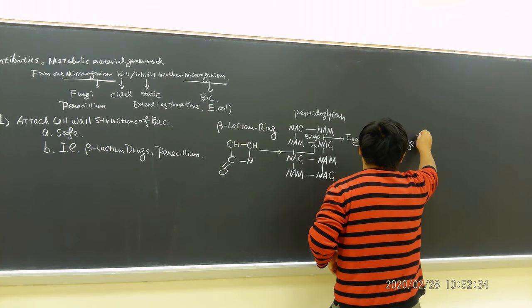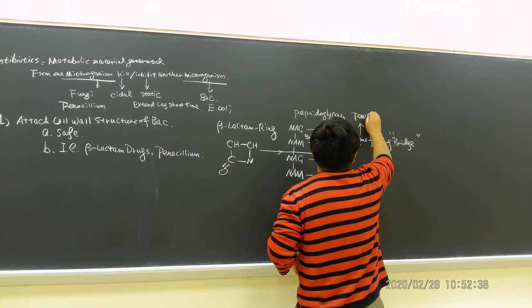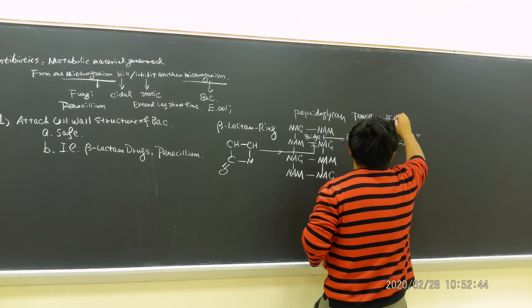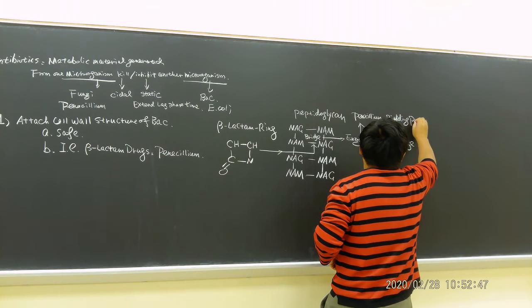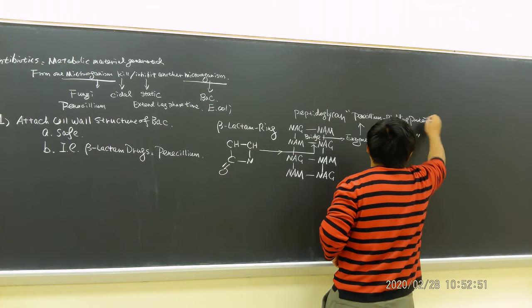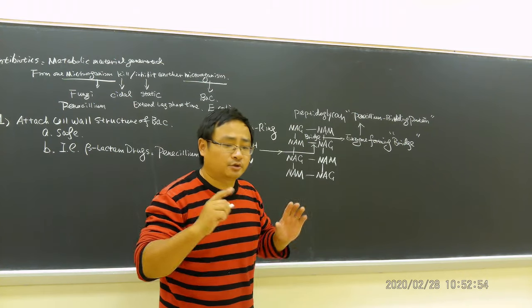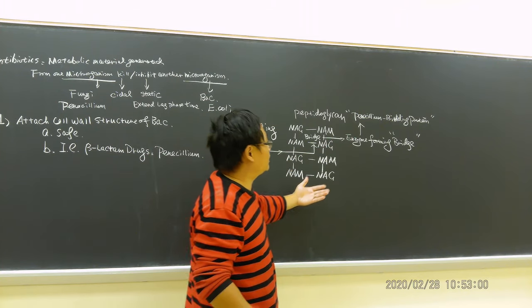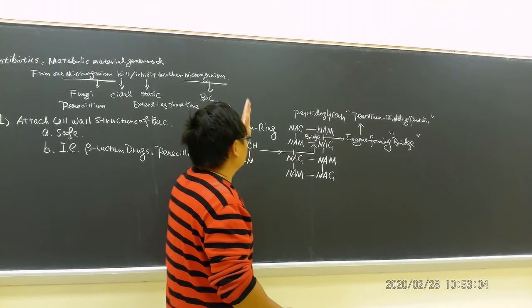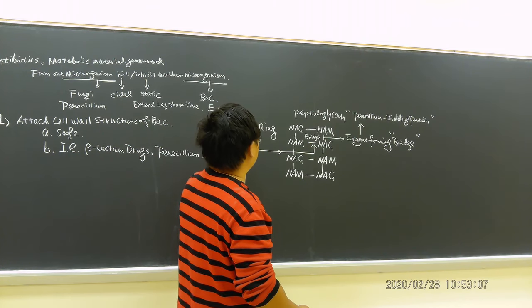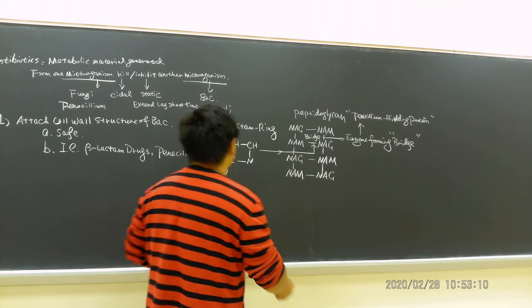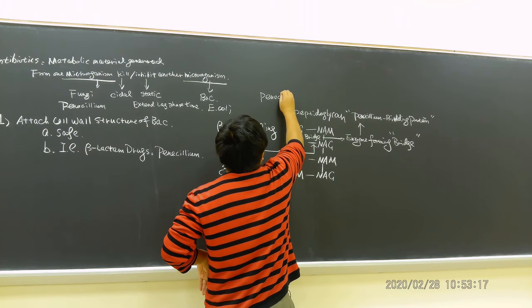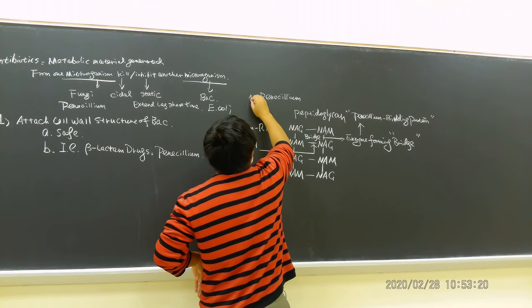Where are they really attacking? They are attacking the enzyme that helps form the bridge. What's the name of this enzyme? This is called penicillin binding protein. Why this name? Because when they did penicillin research, they found this enzyme. That's why in scientific areas they call it penicillin binding protein.